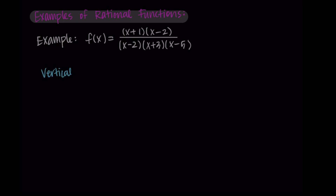Let's start with the vertical asymptotes and the holes, but we're also going to find the horizontal asymptotes, the vertical and horizontal intercepts, and the domain. I like to find the vertical asymptotes and the holes at the same time because they're related to each other. The vertical asymptotes occur when we're dividing by 0, so where the denominator is 0, while the holes are when we have 0 over 0.